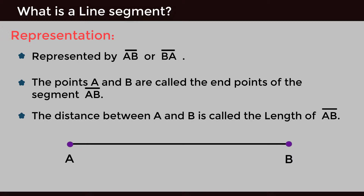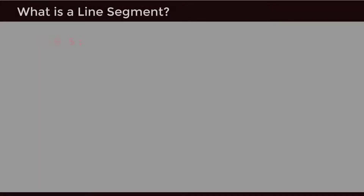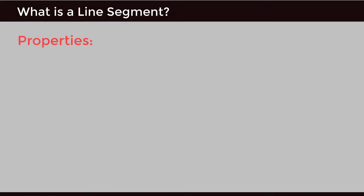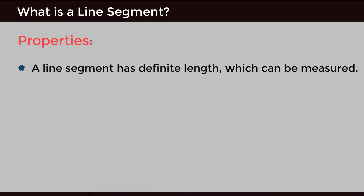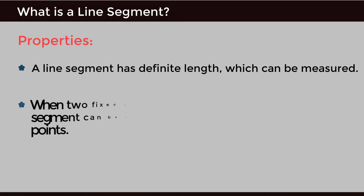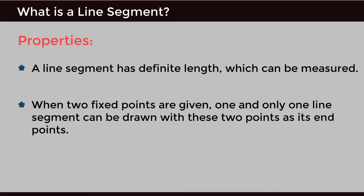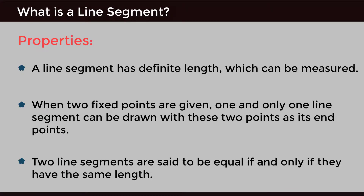The distance between A and B is called the length of AB bar. Properties: A line segment has definite length which can be measured. When two fixed points are given, one and only one line segment can be drawn with these two points as its endpoints. Two line segments are said to be equal if and only if they have the same length.